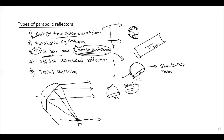The fifth type is the Torus Antenna. This is also an important question for two-mark answers. The Torus antenna is a better version of the offset reflector.